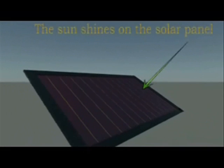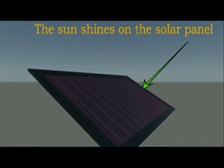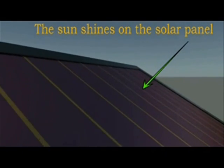The solar panel uses photons from the sun to create electricity. Let's take a closer look at this nanoscopic process which enables us to harness electricity from the sun.